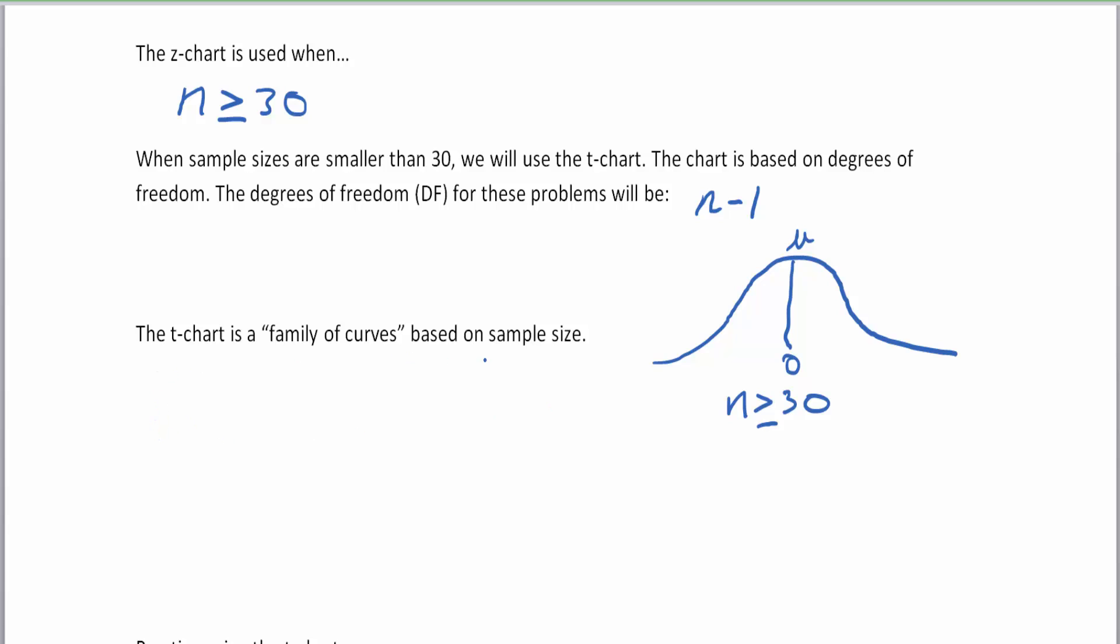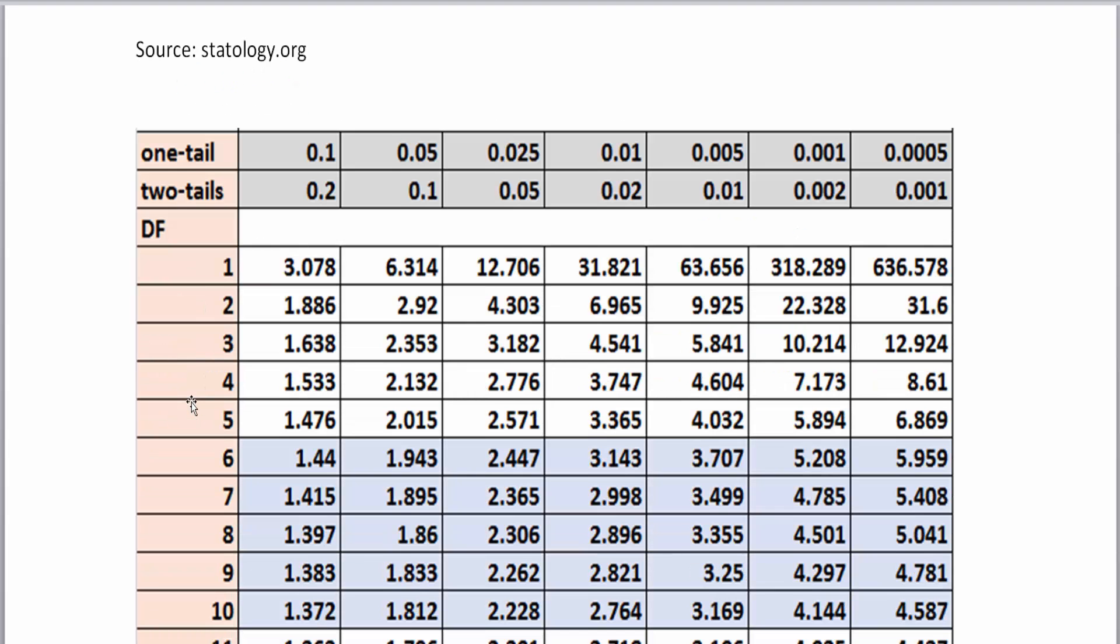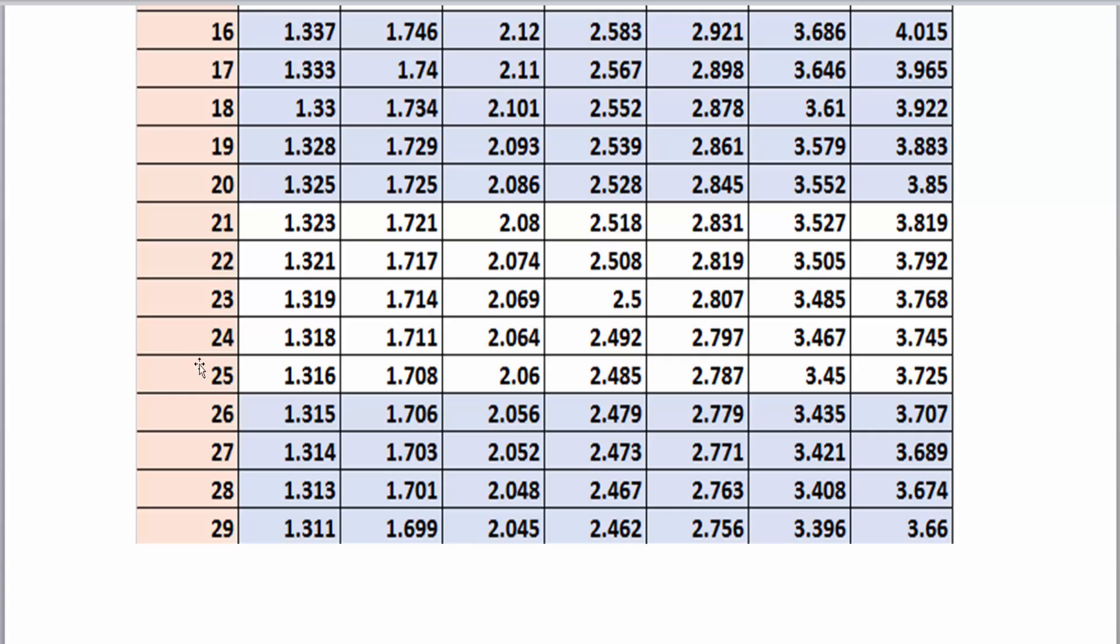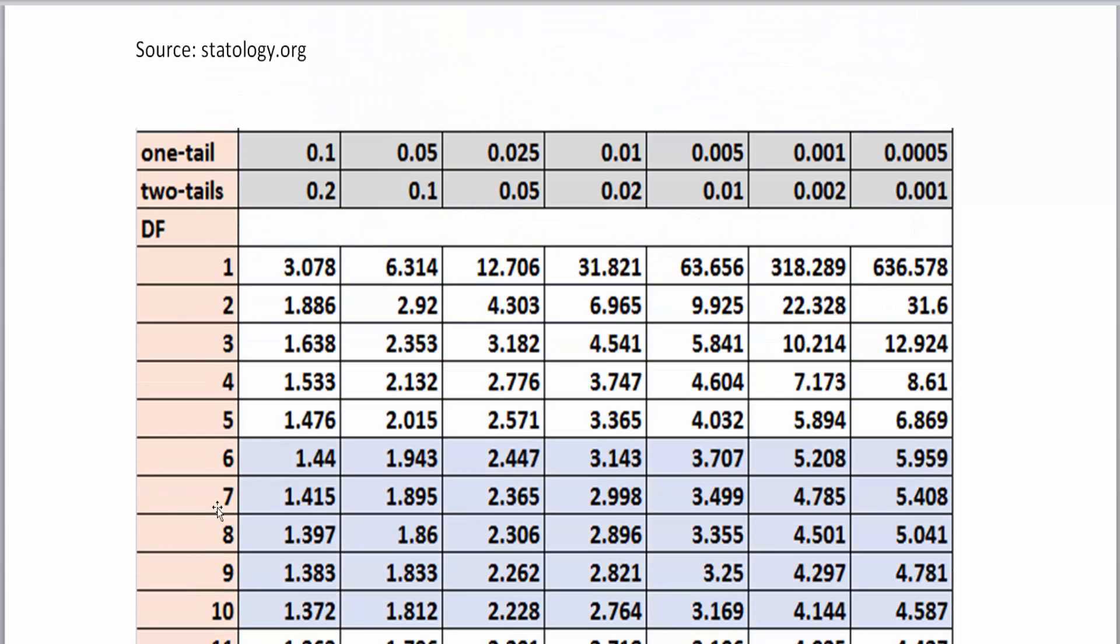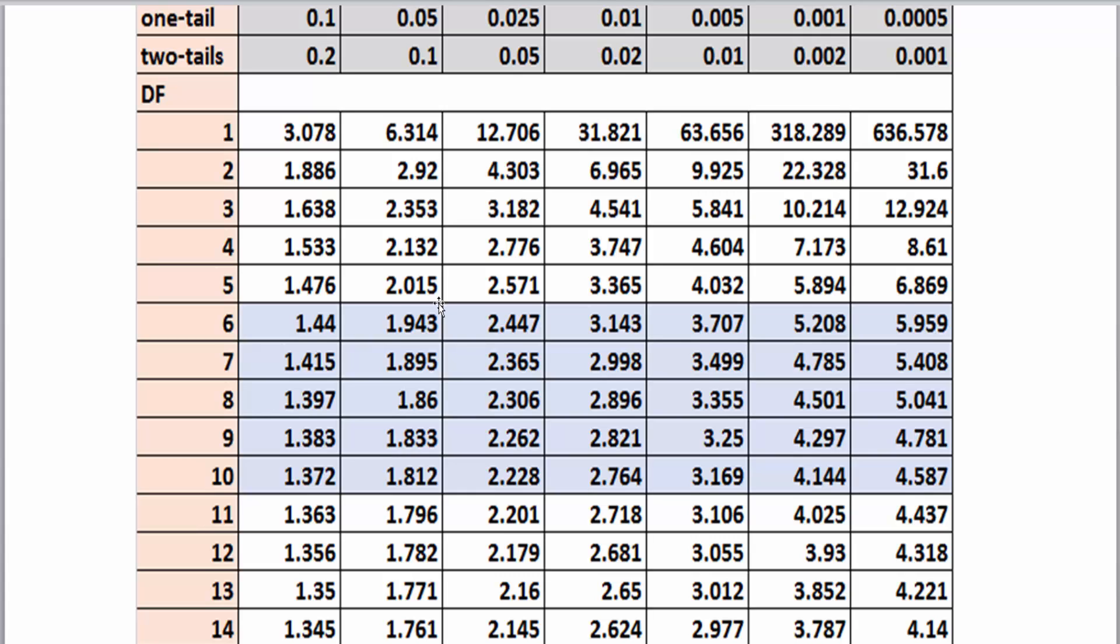Well, for the family of curves here, if you take a look at the chart, it has 1 through 29. Now the chart does go on beyond that, but because I'm using a simple system of choosing which chart to use, I didn't actually print anything higher than this because we're going to be dealing with small sample sizes.